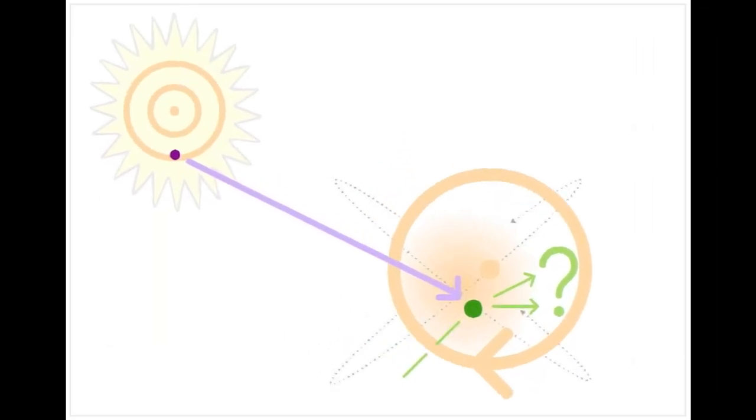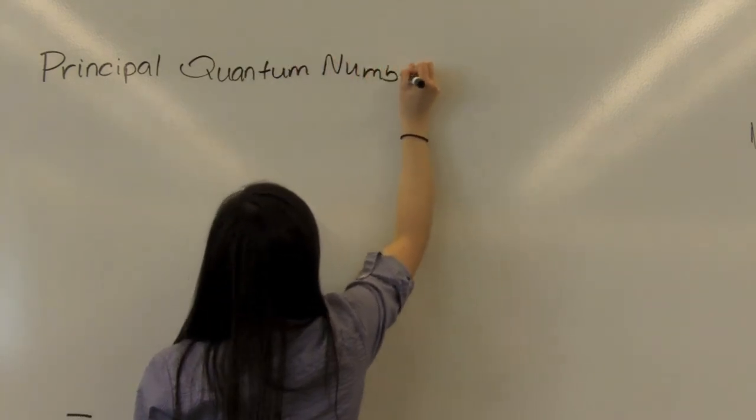Although it is impossible to know the exact location and momentum of any electron within an atom, each electron can be described by four quantum numbers.